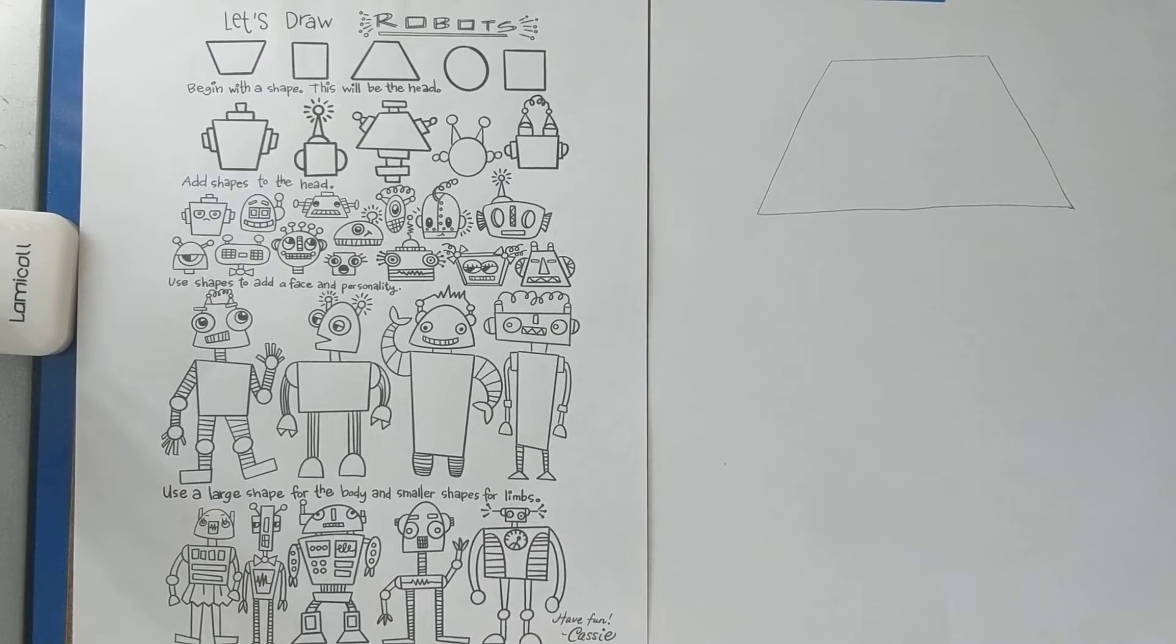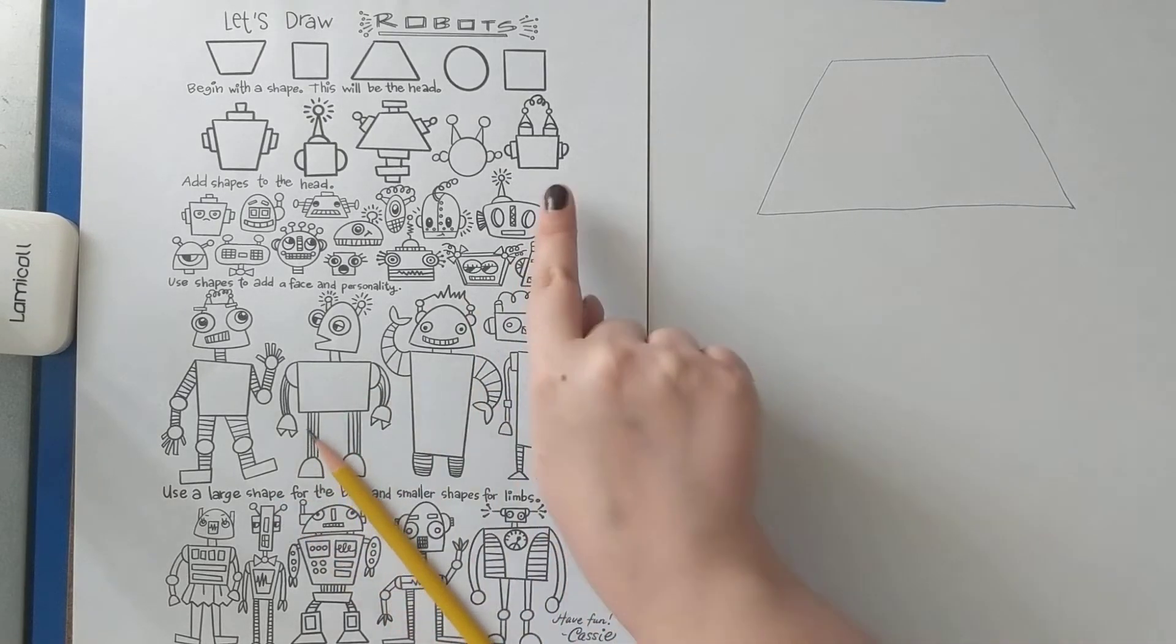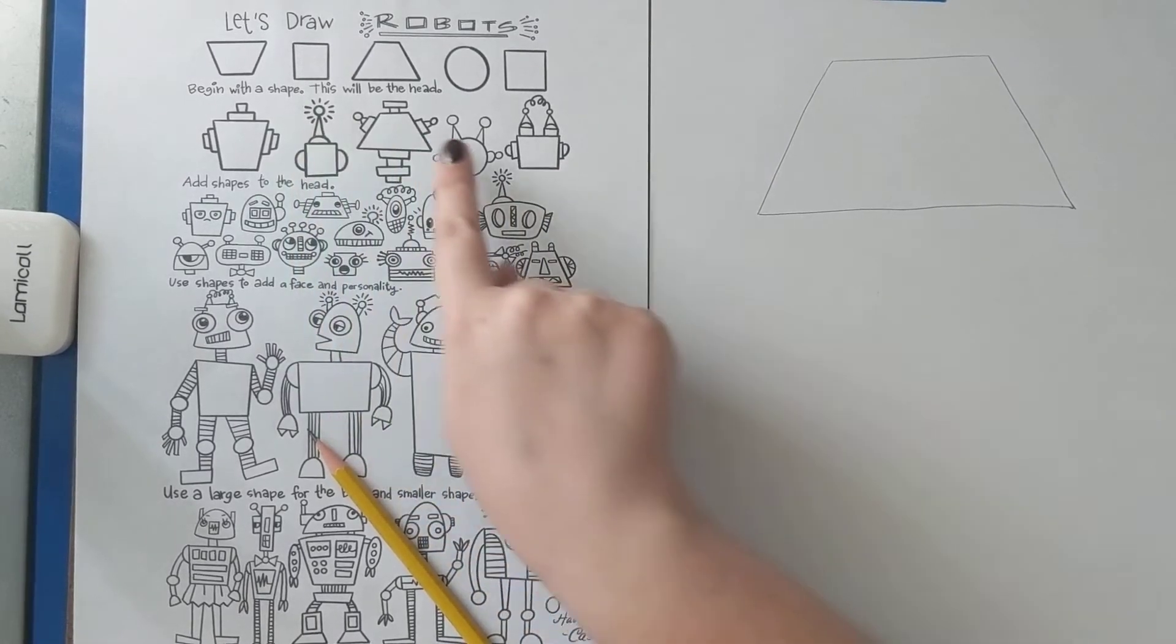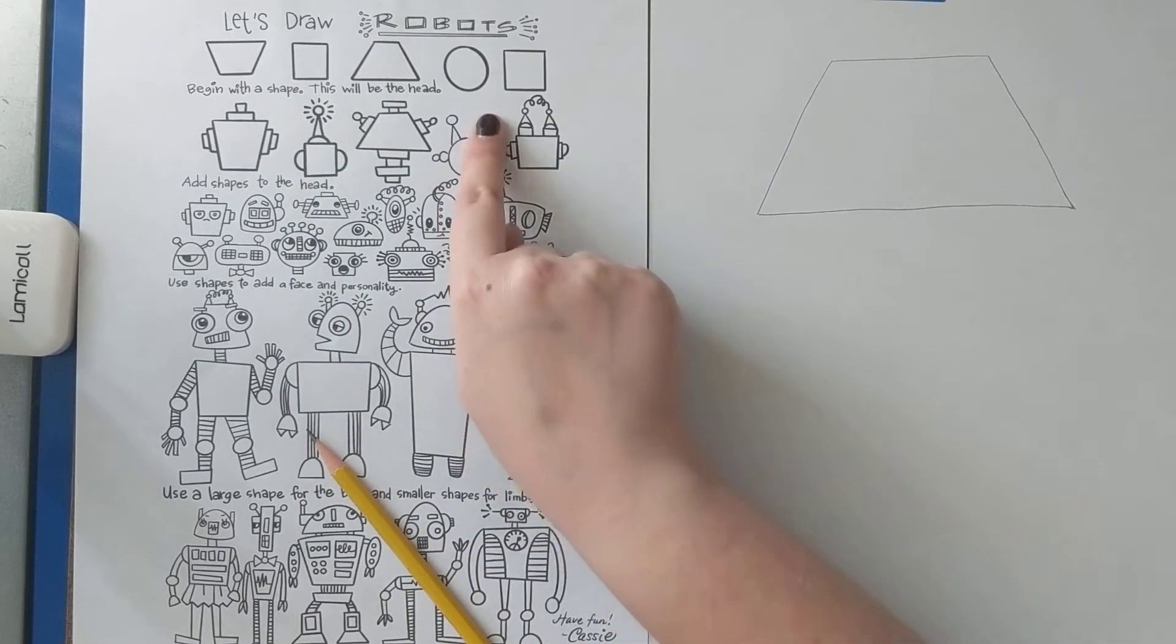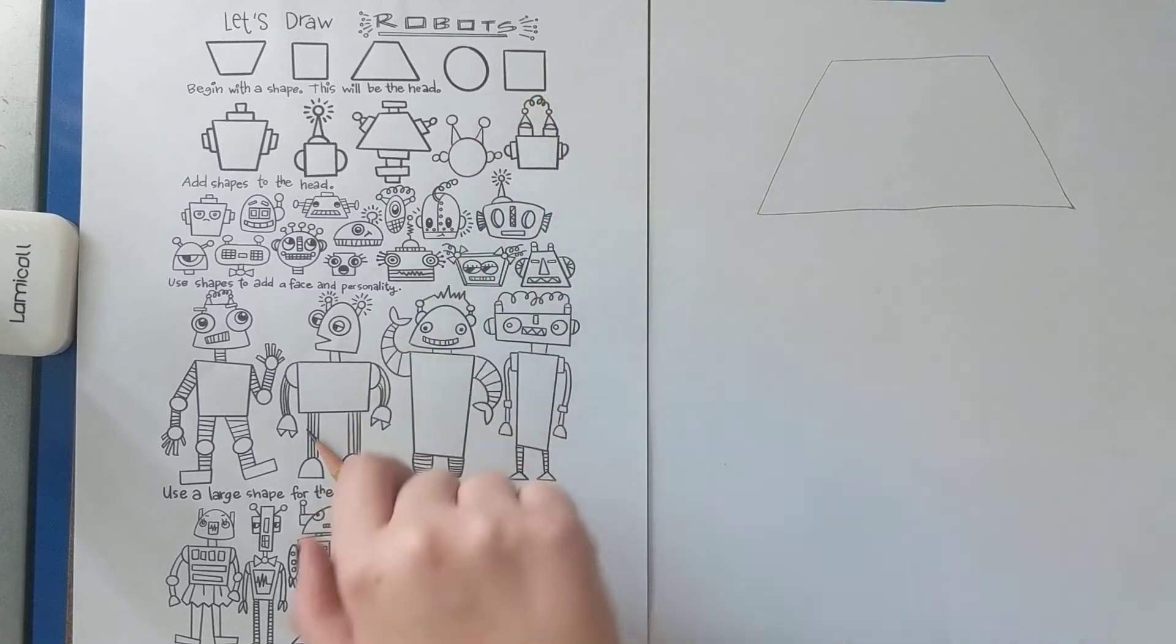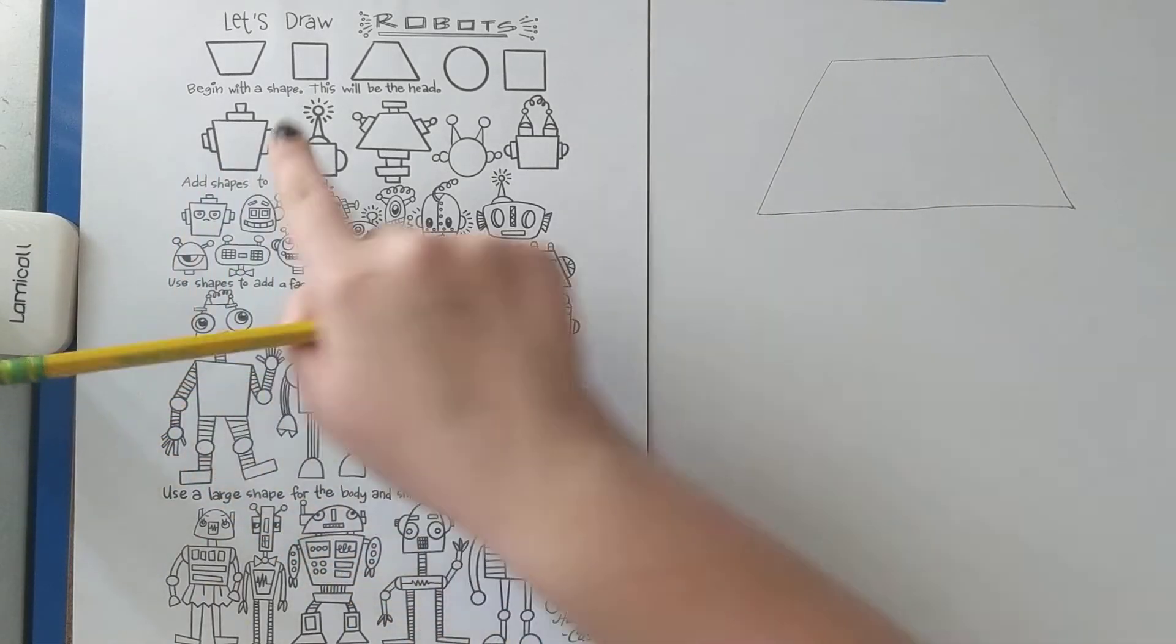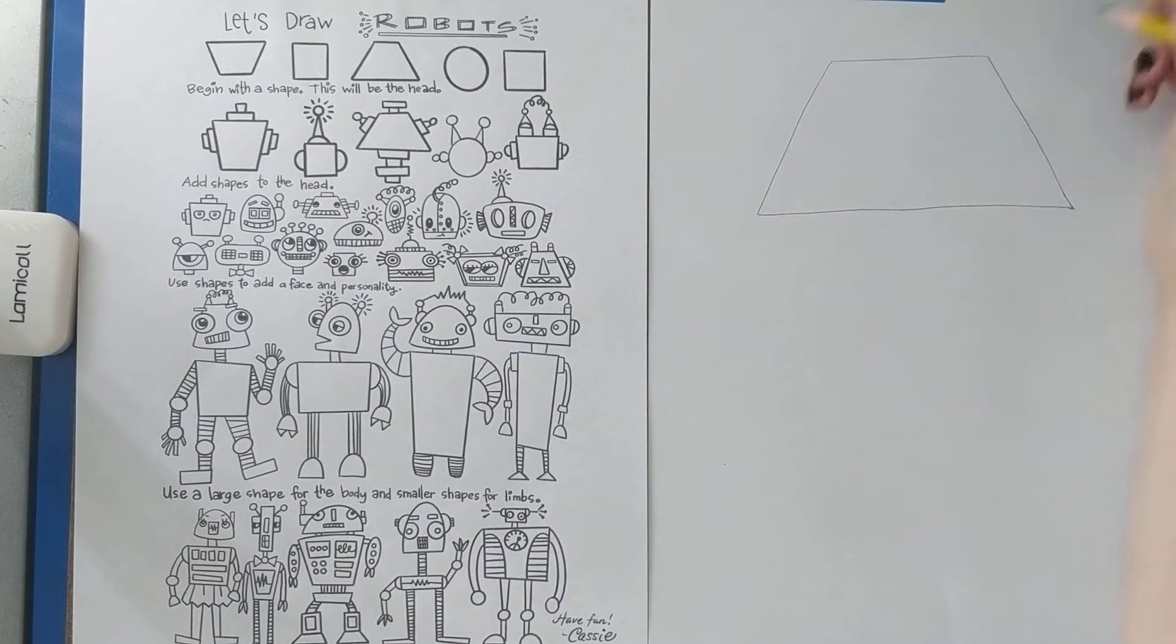Next step we want to add some shapes to the head. So these could be almost like ears. Maybe there's an antenna on the top. Maybe it's got kind of like it almost looks like little party hats. Maybe there's a little wire. Whatever you really want. There aren't really many rules to drawing a robot. I kind of like these on the side so I might add something like that. Maybe I want them to be a little rounder. Maybe I'll make something like that. So maybe half of a circle. Maybe another half circle. Maybe I'll add a little triangle.